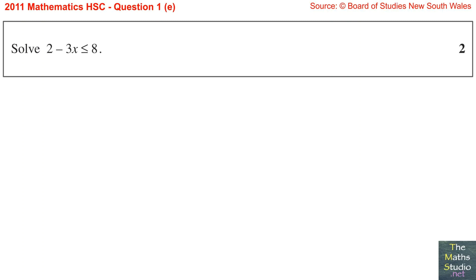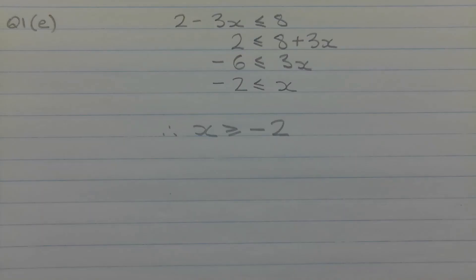Question 1, Part E. Solve 2 minus 3x less than or equal to 8. I'm going to demonstrate a method of solving this inequality without requiring the flipping of the inequality sign until the very end.